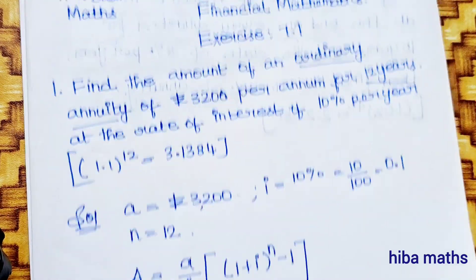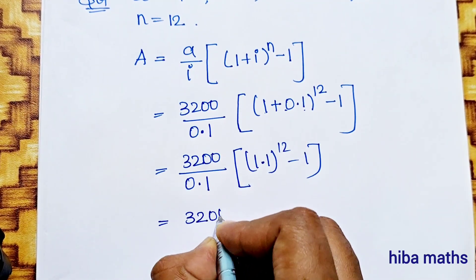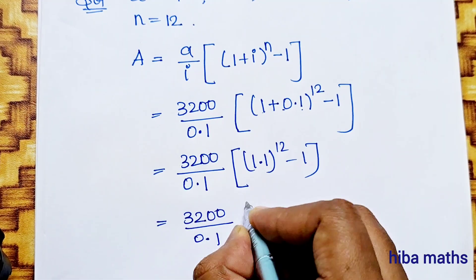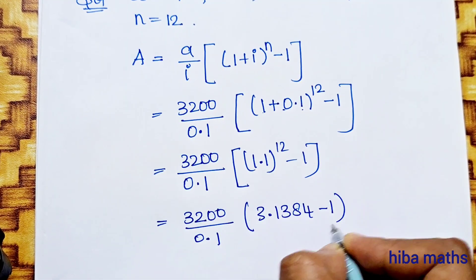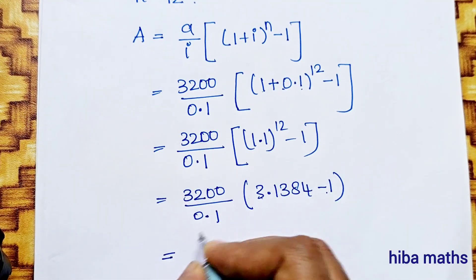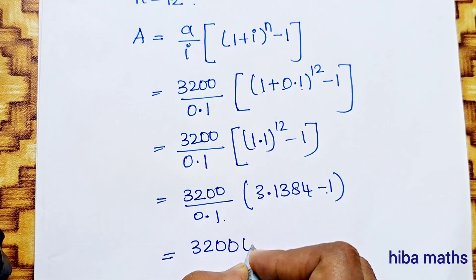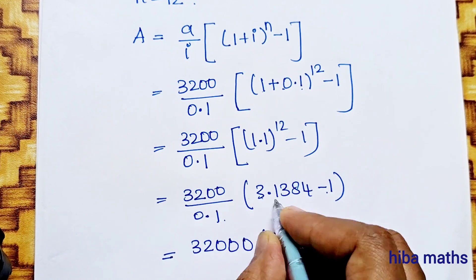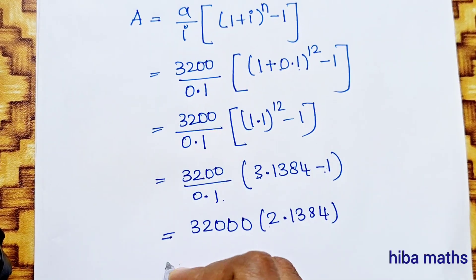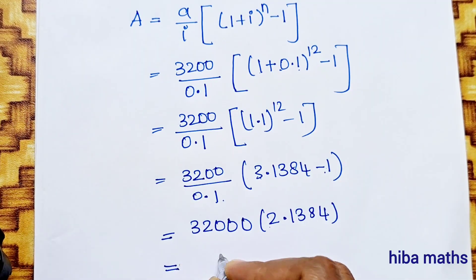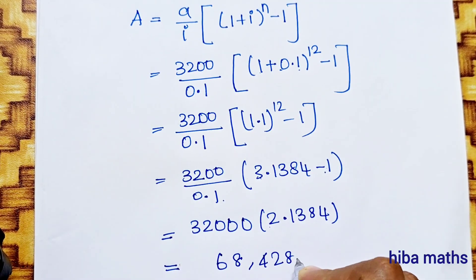The value of 1.1 to the power 12 is already given — direct substitute: 3.1384. So we get 3200 divided by 0.1, times (3.1384 minus 1), which equals 3200 divided by 0.1, times 2.1384. Multiplying gives approximately 68,428.8.